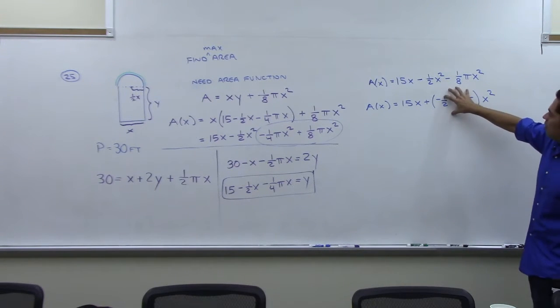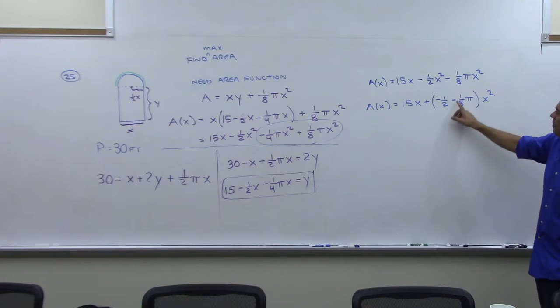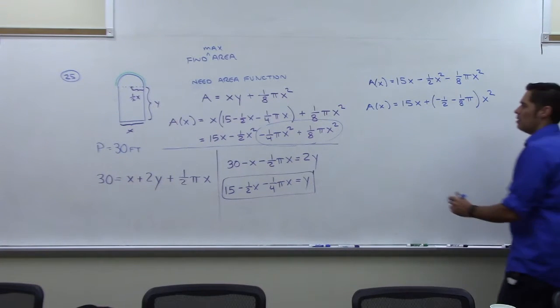Now the reason I did that, because that's all just a constant, right? Negative one-half minus one-eighth pi, that's just a number. Who knows what it is?